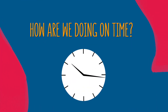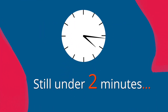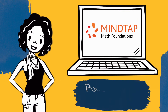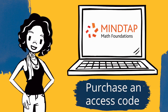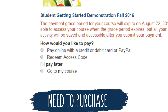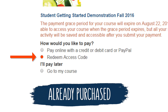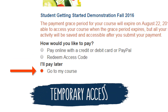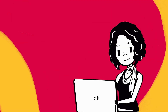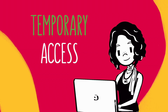How are we doing on time? Still under two minutes and we're nearly done. To access all the helpful tools throughout your course, you'll need to purchase an Access Code. If you still need to purchase a code, select Pay Online with a Credit Card, Debit Card, or PayPal, and we'll get you set up in no time. If you've already purchased an Access Code, select Redeem Access Code. Need more time? No problem — jump right in with Temporary Access. You'll need to purchase your course within the next couple of weeks, but we want you to be able to begin your course on the right track.